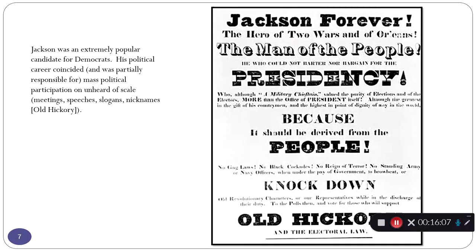In the 1810s, 1820s, and 1830s that wasn't the case — it was a much more formal kind of thing. Jackson becomes a candidate around the time when different states are relaxing the rules on political participation. According to the Constitution and state laws in the 1780s, 90s, and 1800s, you had to be a property owner before you could vote. The thinking was that property ownership gave you a reason to make a good decision.